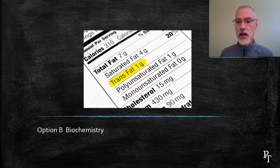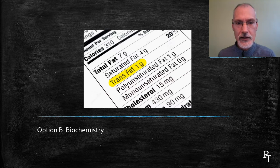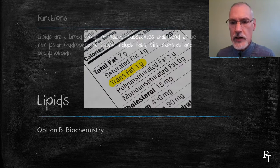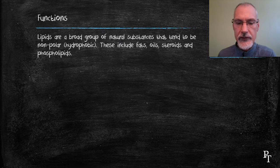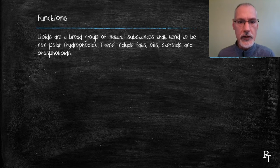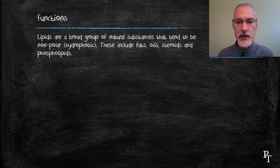Saturated fat, trans fat, polyunsaturated fat, monounsaturated fat, cholesterol — these are all examples of a broad group of compounds that we call lipids. Lipids are a broad group of natural substances that tend to be non-polar, meaning that they don't like water. Hydrophobic is the word we use to describe such substances, and these will include fats, oils, steroids, and phospholipids.